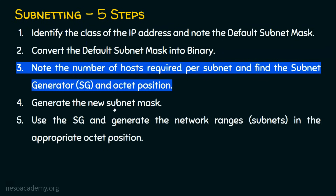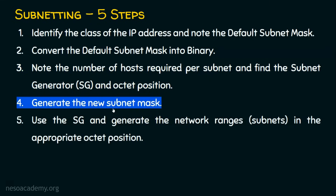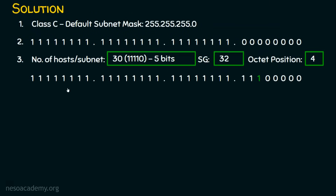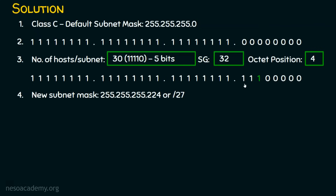Step four: generate the new subnet mask. We have already generated it. The new subnet mask is 255.255.255.224, or /27. Why /27? We have 27 ones in the subnet mask — 8 ones in each of the first three octets (24 total), plus bits 25, 26, and 27. In the fourth octet, the ones represent 128+64+32 = 224. So the new subnet mask is 255.255.255.224 (/27).